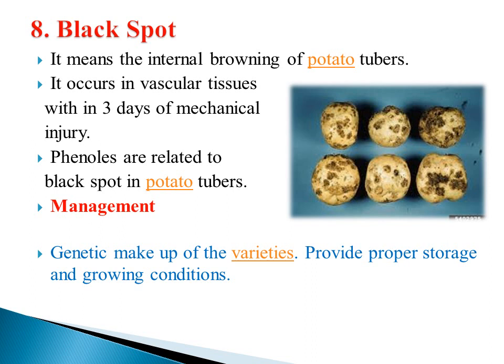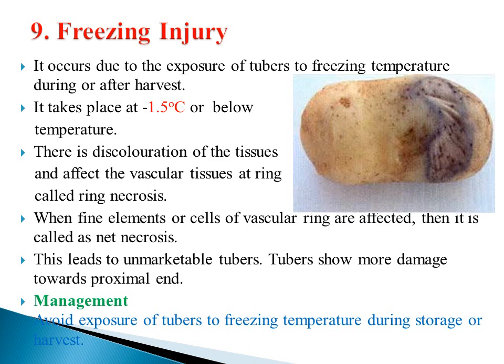The ninth disorder is freezing injury. It mainly occurs in storage conditions, during severe frost or very low air temperatures. It occurs due to exposure of tubers to freezing temperatures during and after harvest, or during tuberization when temperature drops below optimum. This injury takes place at minus 1.5 degrees Celsius or below.